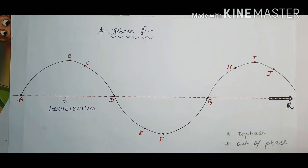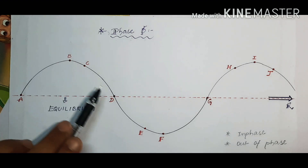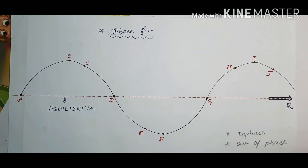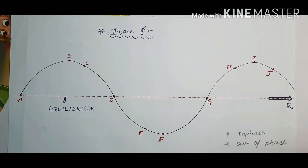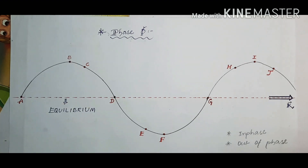One more interesting case is to find the phase difference between points B and D, and between points G and I. The phase difference between B and D, and between G and I, is 90 degrees.